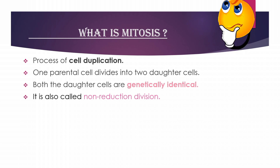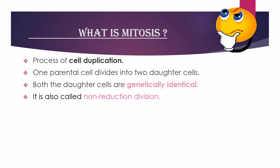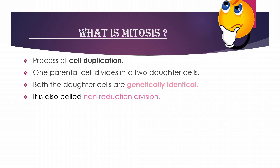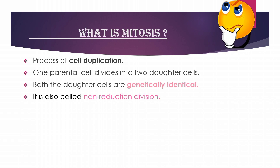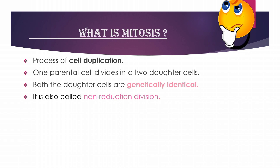The first dividing cell is the parental cell, and the new cells produced are called daughter cells. The genetic material of the daughter cells is identical to that of the parental cells. So the daughter cells are genetically identical to the parental cells — the same genetic material is found in both.